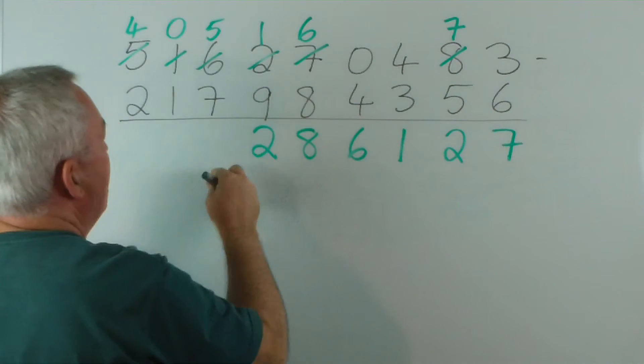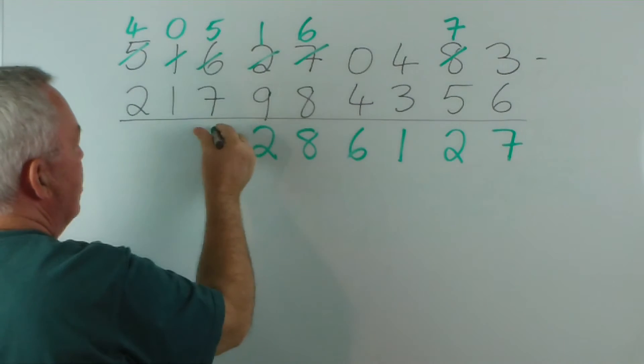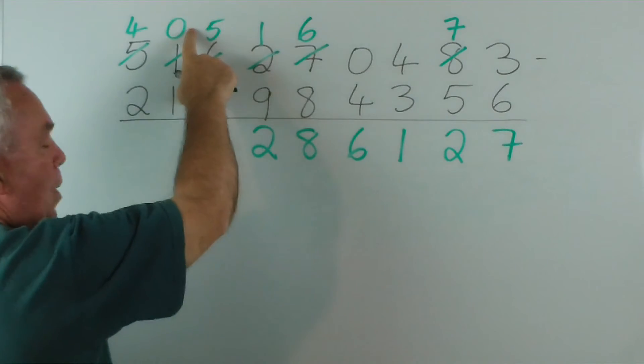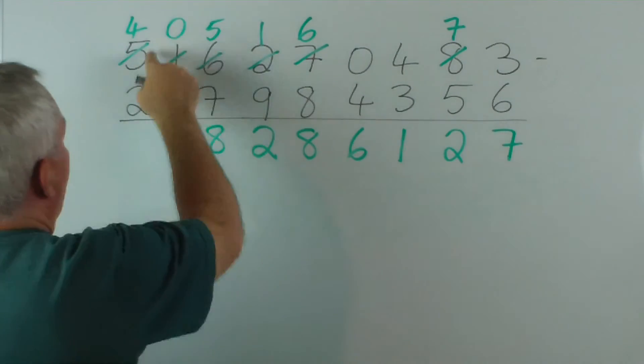7 is larger than 5, but the difference is 2, and we subtract that from 10. 1 is larger than 0, but they're 1 apart, and we subtract 1 from 10. And 4 minus 2 we can do.